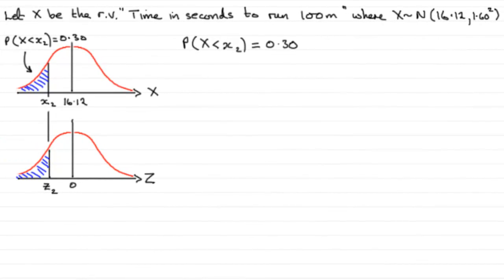Now for this part of the question, we're told that 30% of the children get a certificate if they run less than a particular time, and this particular time we've got to find out.